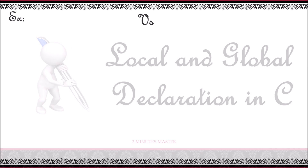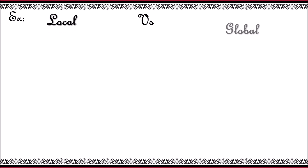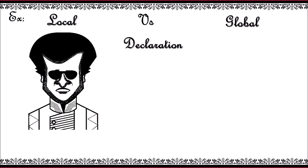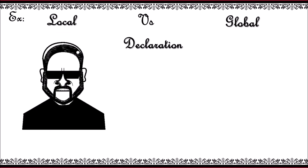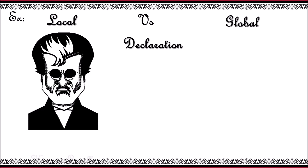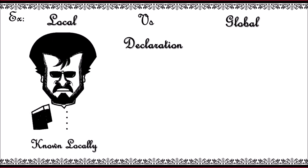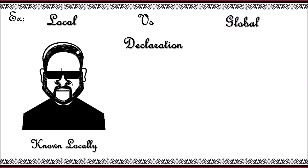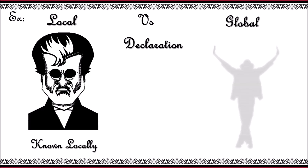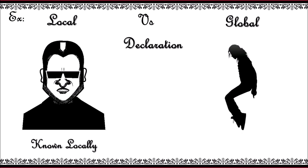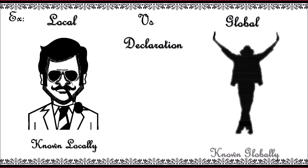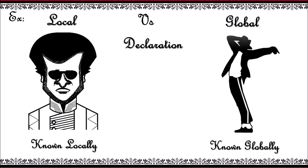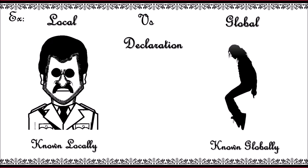Let me explain the topic of local vs global with an interesting example. Consider film actor Rajini Khan, known to people all over the country — he is very famous locally. Now consider another superstar who is a great dancer, Michael Jackson, known to people all over the world. We can call him globally known.